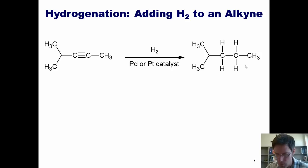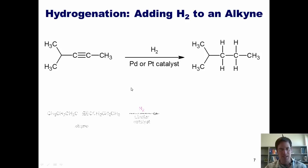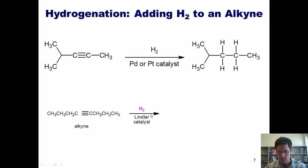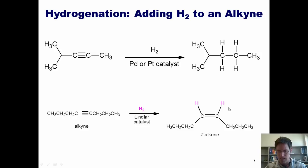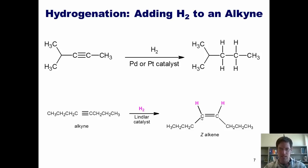So what if I want to reduce my alkyne to an alkene? I can react the alkyne with hydrogen gas and Lindlar catalyst, which is palladium that's been poisoned with lead. Because of that poisoning, Lindlar's catalyst is less reactive than typical palladium, so it can add two hydrogens to the alkyne, converting it to an alkene, and then stop. As with standard catalytic hydrogenations, Lindlar catalyst also adds the hydrogens to the same site, so you get a Z alkene.